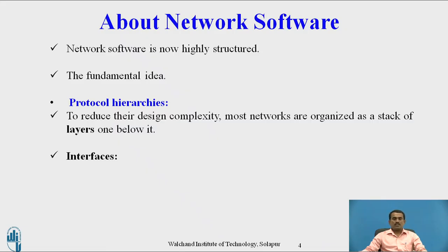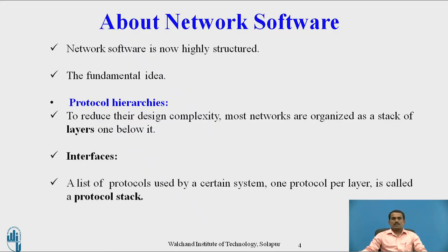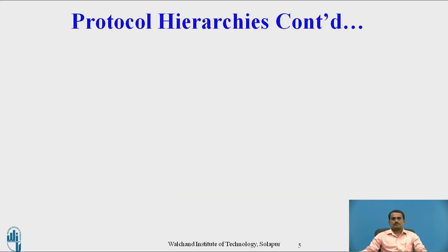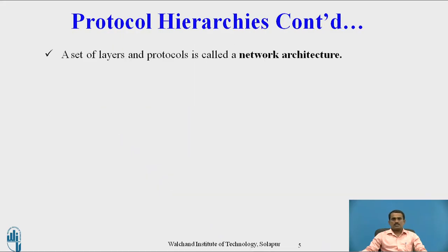Both layers have to communicate with each other, and if it is free, then only it is possible to pass the data. A list of protocols used by a certain system — one protocol per layer — is called a protocol stack. Protocol hierarchy, a set of layers and protocols, is called a network architecture. In the network architecture, we have to use a number of layers and a number of protocols for different layers. Each protocol plays a different role for different layers while transmitting the data.